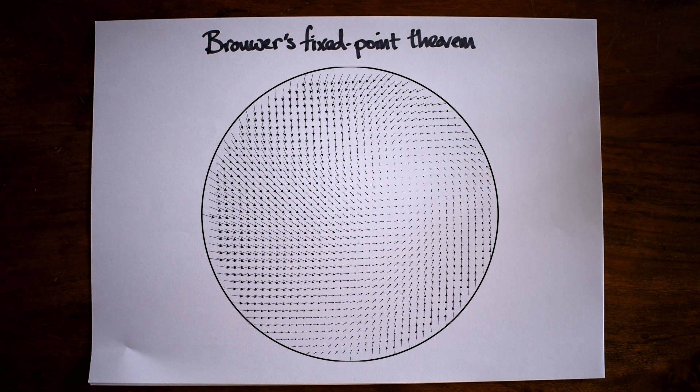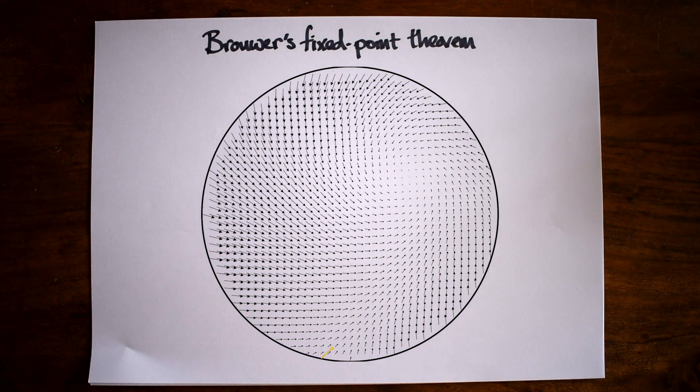The boundary was important in proving the 1d case, and it's important here too. As we move along the boundary, see how the vector makes a full rotation. So at some points on the boundary the vector will be pointing directly left, down, right or up.